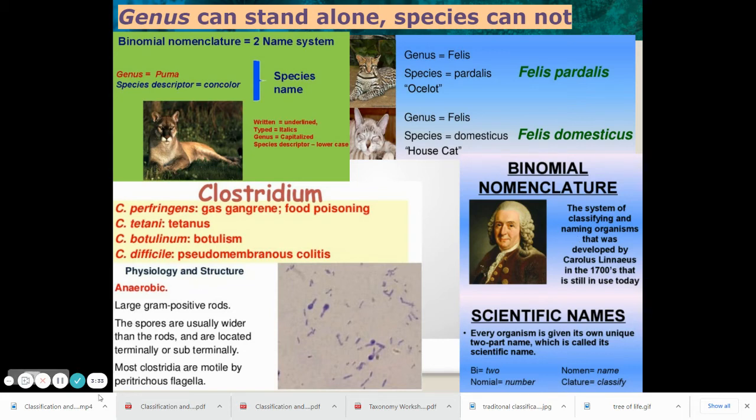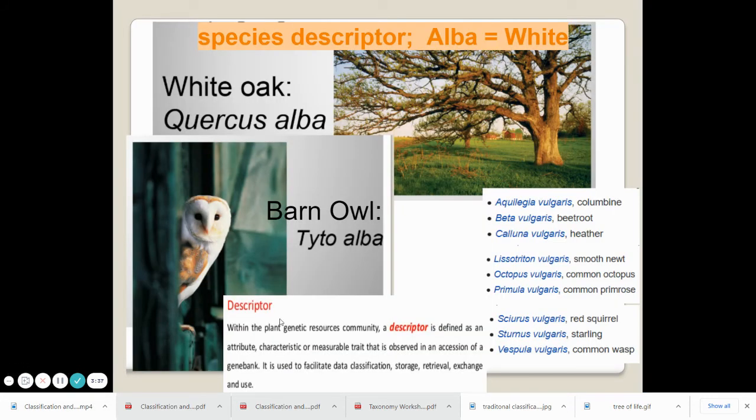Now, one thing, and I'm going to go back to the previous slide, is that we want to avoid writing the species by itself because it cannot stand alone. Because the species name, again, is probably going to be descriptive, somehow descriptive of the organism itself. And we could see with this tree and with this owl that we use the same species descriptor for white.